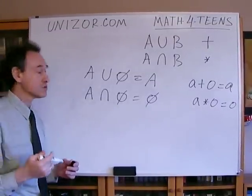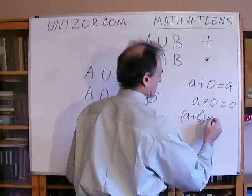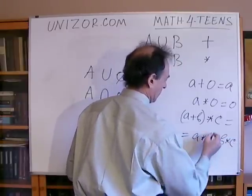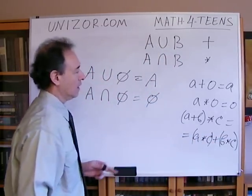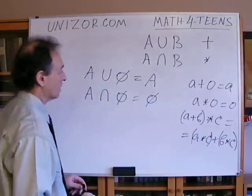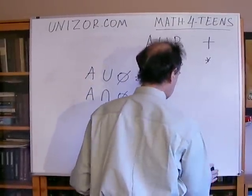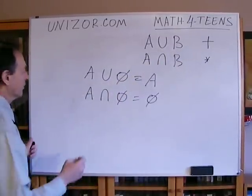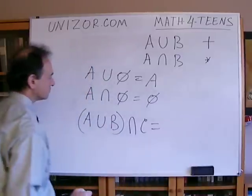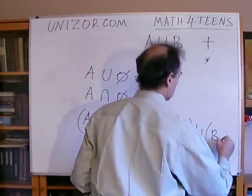There is another very interesting law called the distributive law. Among numbers, it's something like: a sum of two numbers multiplied by a third one — you can multiply first by third and then second by third and add them together. A very similar law exists among sets using union and intersection. If I have A union B intersect with C, it will be the same as A intersect with C, unionized with B intersect with C.